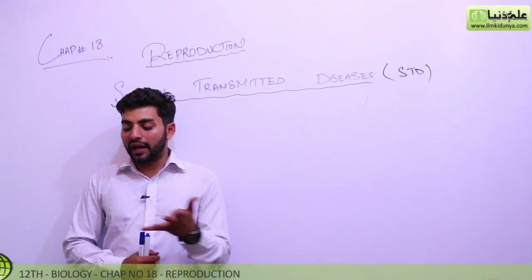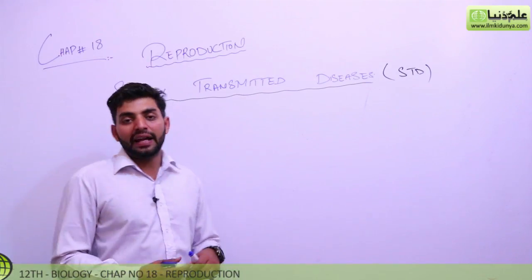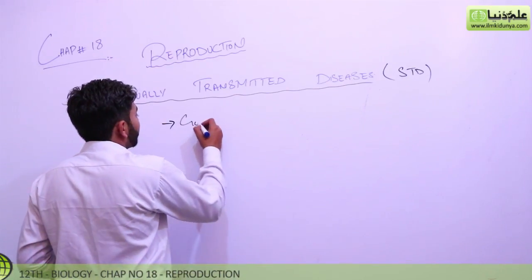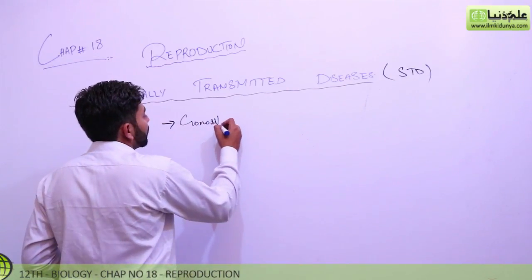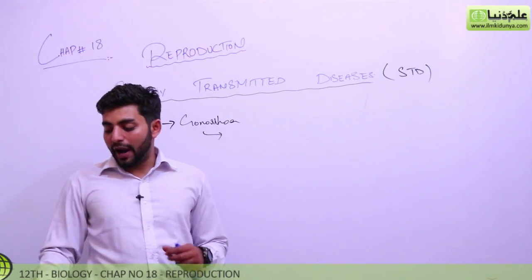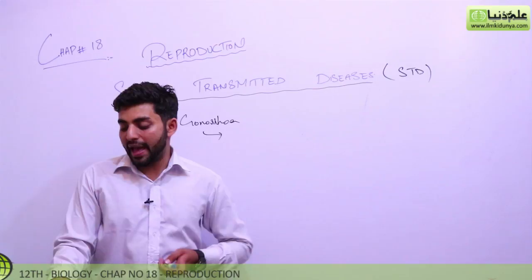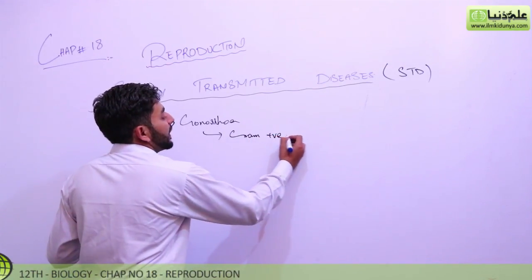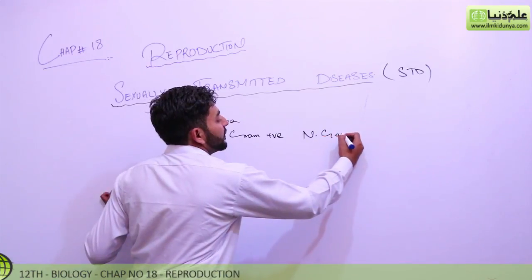Four are given, first is gonorrhea. Gonorrhea is caused by a gram positive bacterium whose name is N. gonorrhea, Neisseria gonorrhea is its name.